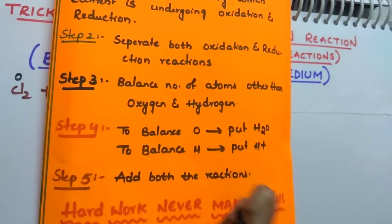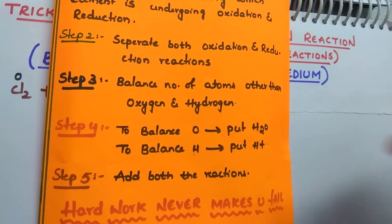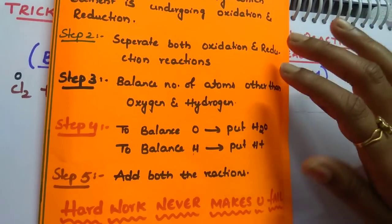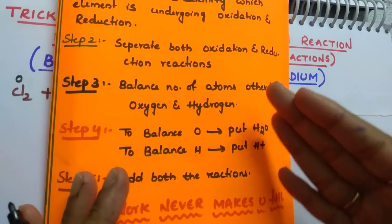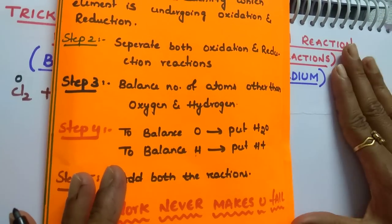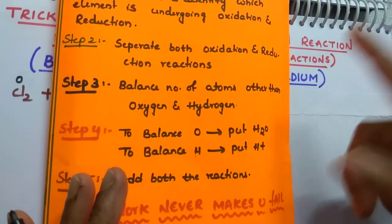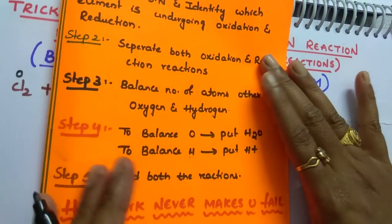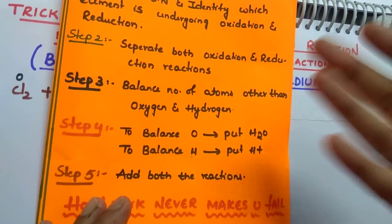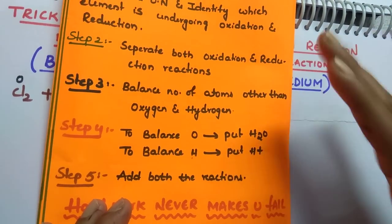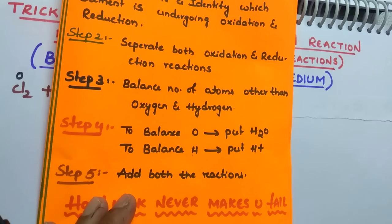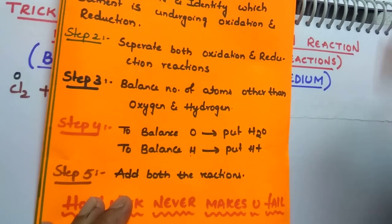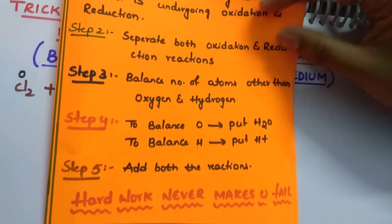Before adding, just check whether the number of electrons in both the reactions are the same or not. If the number of electrons in both reactions are not the same, then multiply with a suitable number so that the number of electrons will become the same. After that, add both the reactions and you will get a balanced reaction.